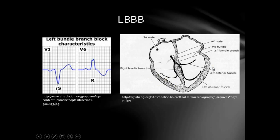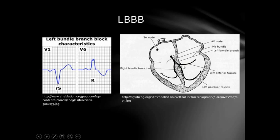The second point is that the intraventricular septum (IVS) is normally activated from the left side to the right side, owing to the thicker Left Bundle Branch and the fact that most of the IVS is located within the Left Ventricle, and therefore activated by the Left Bundle Branch. But in Left Bundle Branch Block, the IVS is forced to be activated from the right side to the left side, reaching the Left Ventricle.